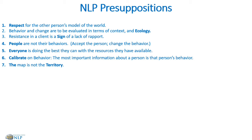As we take information in, we delete, generalize, and distort based on our own internal filters, and so we create our own internal representation. When we use language to describe a particular thing, we're only doing that from within our own neurology. That word we're using isn't the map at all — it's simply a description, and it can never totally represent the experience itself. For each client, I'll use words that produce the most results in them.